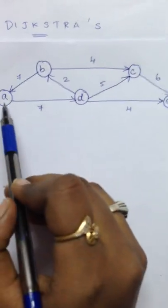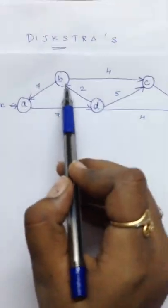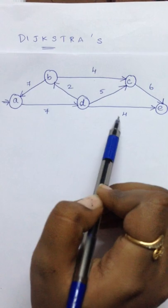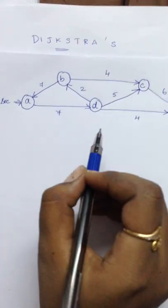Here we have five nodes A, B, C, D and E. They are connected by a directed graph and these numbers represent the cost.